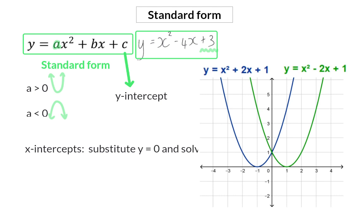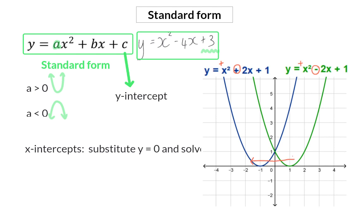For this, we are going to have a look at the signs of the a and the b-value in the equation. In the sketch, we have two positive parabolas — both a-values are positive. For the blue function, the b-value is also positive, and when both signs are the same, the translation will be to the left. When looking at the green function, you will see that the b-value is negative. This means that the a and b-value have different signs, and when that happens, the graph will translate to the right.